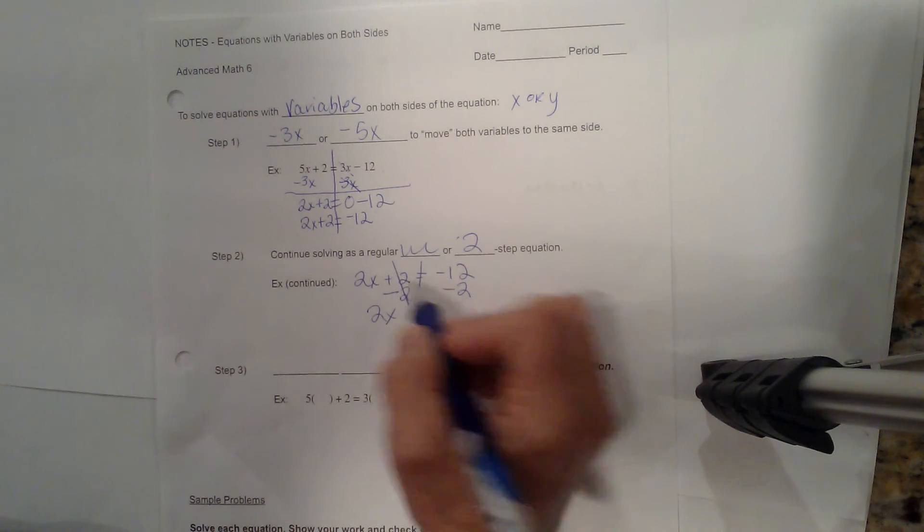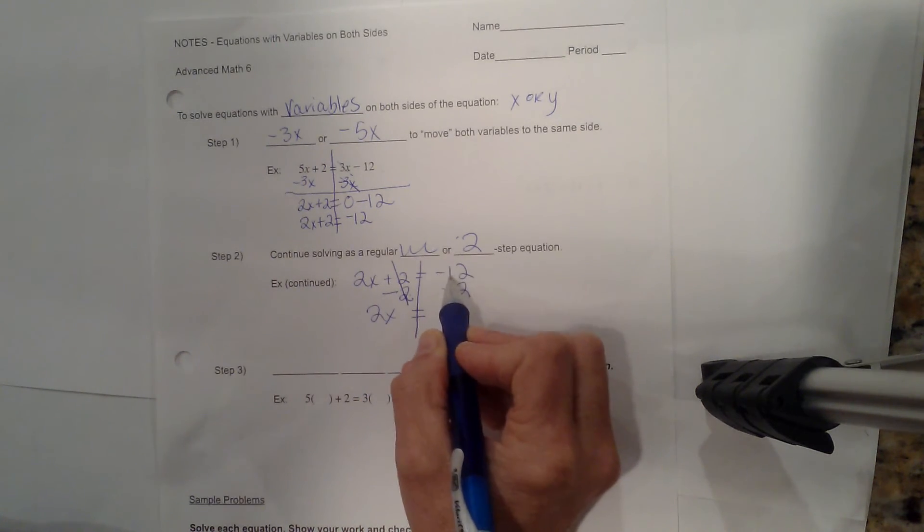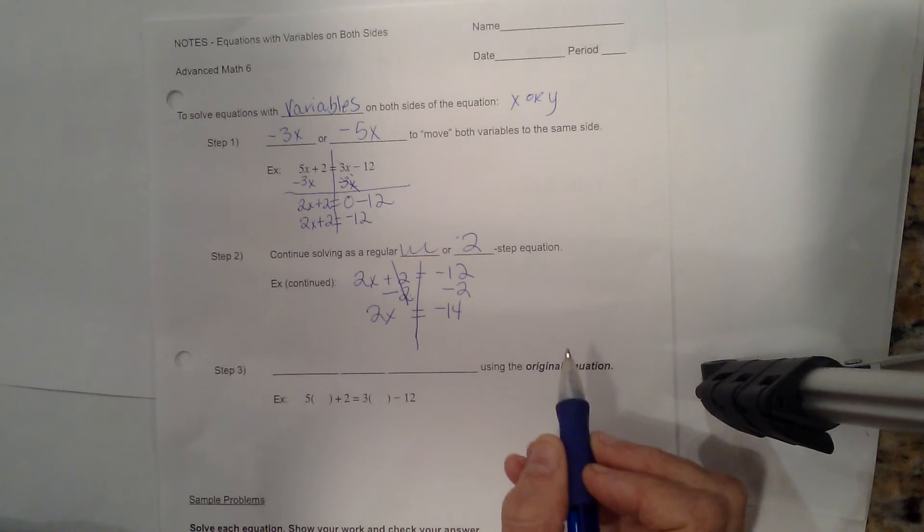2 minus 2, that's 0, equals and then negative 12 minus 2, that's negative 14. So now I've got one more step. I have to get the x by itself.